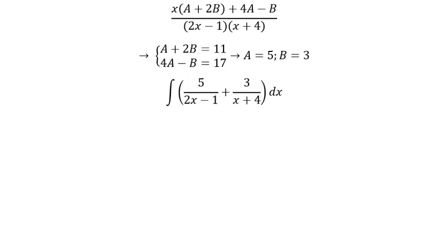And we got the final answer. The integral of 1 over 2x minus 1, we got 1 over 2 ln of the absolute value of 2x minus 1. For this one we got 3 ln of the absolute value of x plus 4.